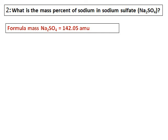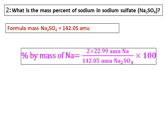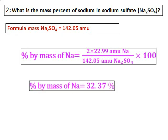What is the mass percentage of sodium in sodium sulfate? The formula is given, so calculate the formula mass of sodium sulfate. Note: we use formula mass and not molecular mass because this is an ionic compound. Use the same formula — there are two atoms of sodium, and hence the percent by mass of sodium is calculated.